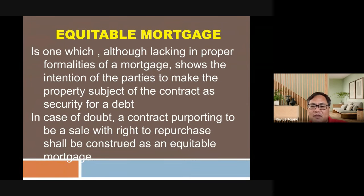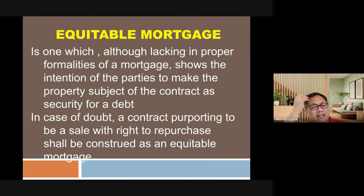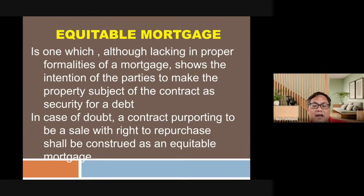In case of doubt, a contract purporting to be a sale with right to repurchase shall be construed as an equitable mortgage — the so-called venta con pacto de retro. The advantage is that you can recover the property even if it has already been sold under a deed of absolute sale. Cases have been won at the appellate and Supreme Court level invoking equitable mortgage even when deeds of sale were executed 30 to 40 years ago.